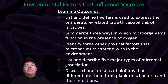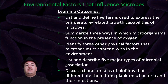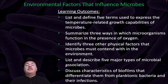By the end of this video, you should be able to list and define five terms used to express the temperature-related growth capabilities of microbes, summarize three ways in which microorganisms function in the presence of oxygen, identify three other physical factors that microbes must contend with in the environment, list and describe five major types of microbial associations, and discuss characteristics of biofilms that differentiate them from planktonic bacteria and their infections.